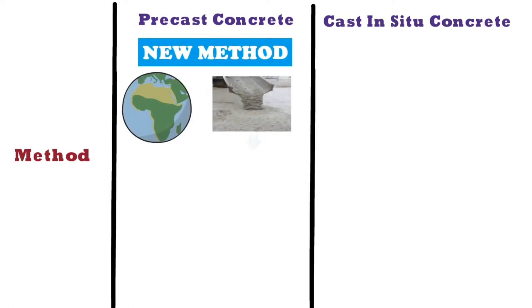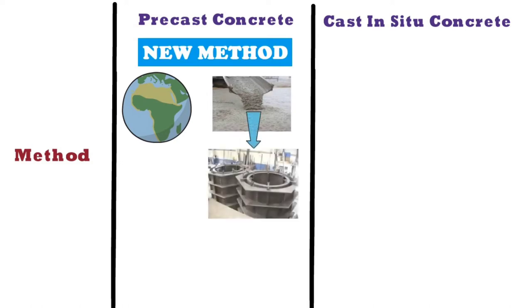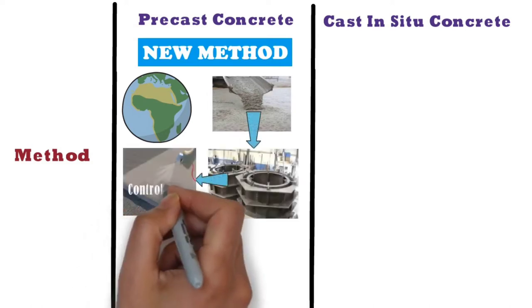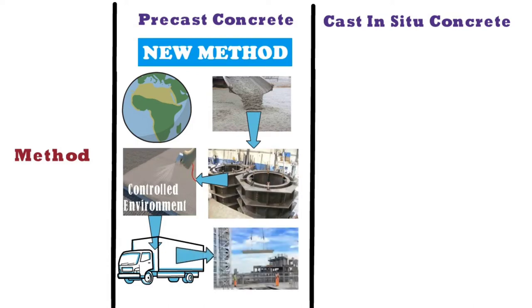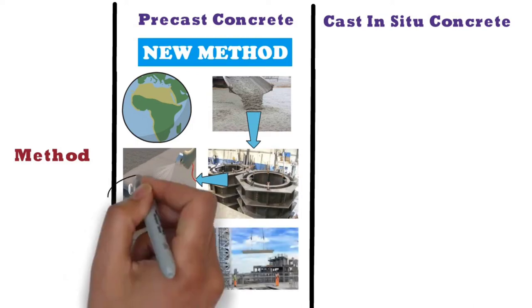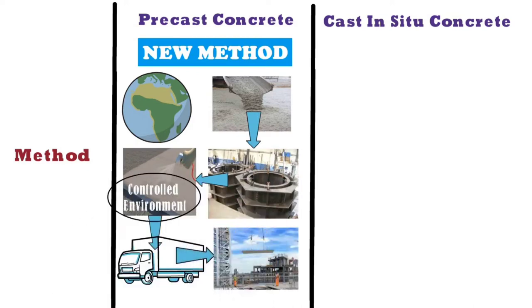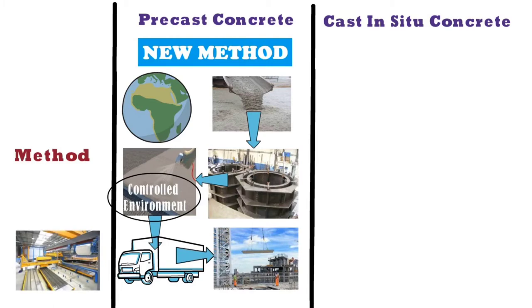concrete is made, poured in reusable mould, cured in a controlled environment, transported to site and lifted into place. Here, controlled environment is nothing but a precast plant.